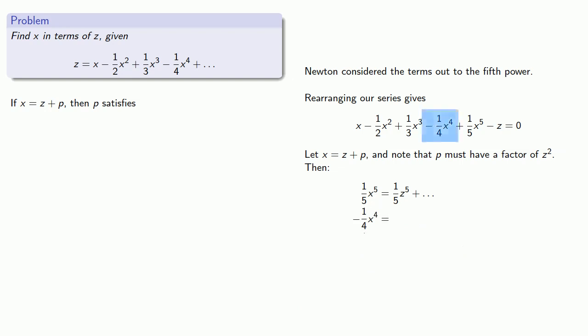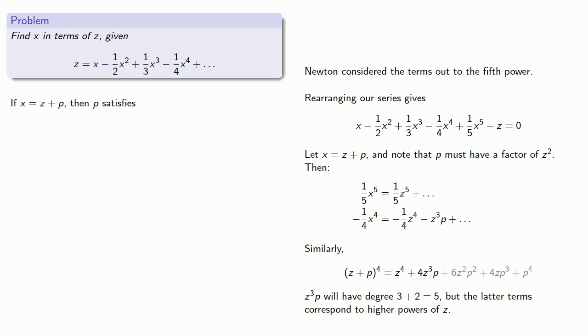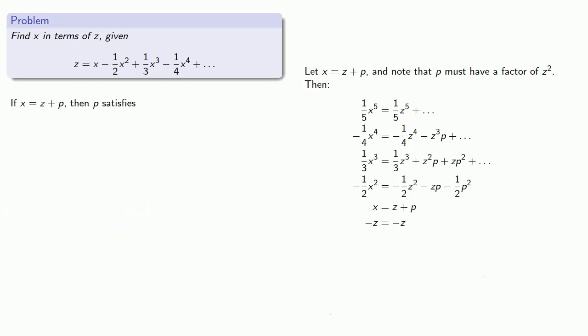A similar thing happens when we try to find minus one-fourth X to the fourth. So, we can expand Z plus P to the fourth. We get a Z to the fourth, a Z cubed P. Now, since we're treating P as a Z squared term, then Z cubed P will have degree of three plus two or five. But the latter terms correspond to higher powers of Z, and so we can ignore them. And so, minus one-quarter X to the fourth becomes minus one-quarter Z to the fourth minus Z cubed P. And similarly, we can find one-third X cubed minus one-half X squared X and minus Z. And after some effort, we'll find all together they give us this mess.